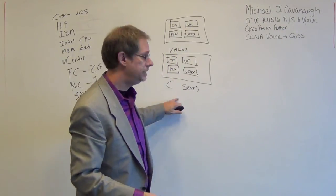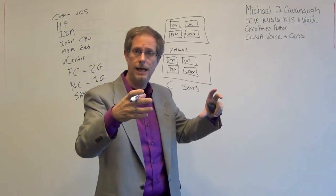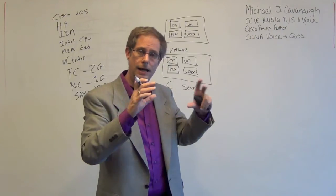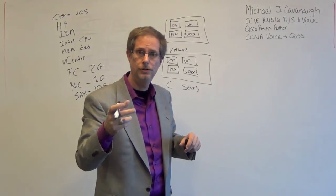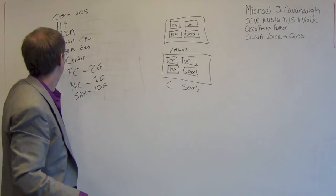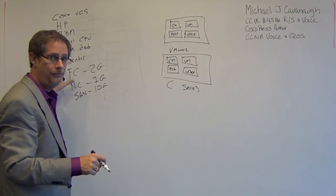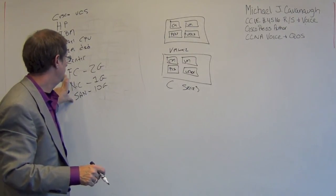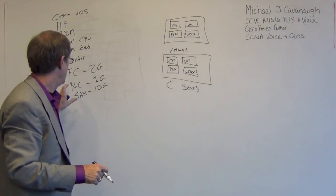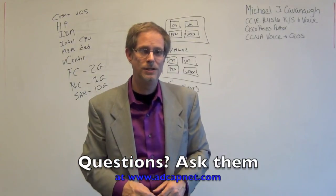In a nutshell: I have a C-Series option, custom-made for voice — order the server, scale up to a certain amount based on the server bought. B-Series is a little more flexible — I can connect into SAN and mix and match voice, VDI, and server virtualization. Specs-based has to be Cisco, HP, or IBM only, Intel CPU from the approved list, memory must be dedicated, vCenter is required, fiber channel minimum is 2 gig, SAN integration for iSCSI is a 10 gig, and my NIC has to be a minimum of 1 gig. Thank you very much for watching. Have a great day.